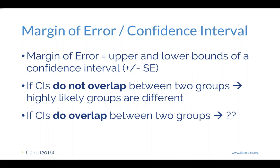Margin of error, or confidence interval: a margin of error is where you take the upper bound and the lower bound of a confidence interval. The easiest way to calculate a confidence interval is one standard deviation above and below your mean. Because if your sample is normally distributed around your mean — or if you have lots of samples from that population, the means of your samples will create a normal distribution — then going one standard deviation from the mean encompasses over 60% of the data values falling within one standard deviation of the mean.